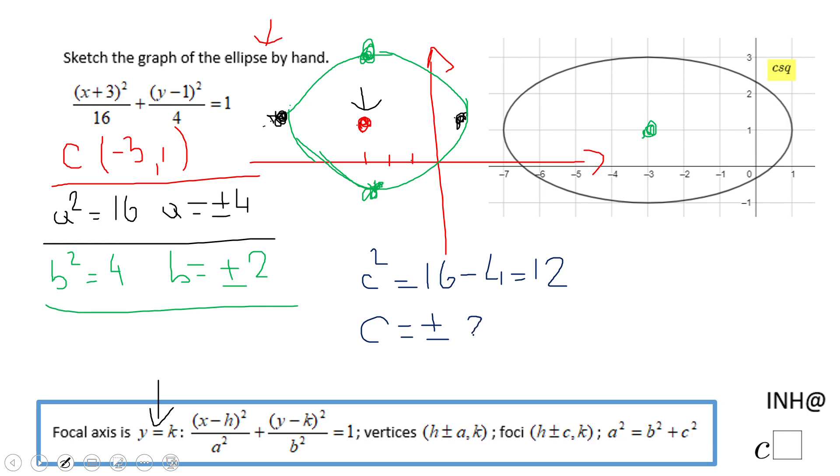So from this center, you're going to move 2 square root of 3 left and right, and you're going to get the foci in case you need them.